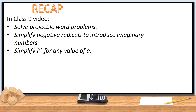Last class we talked about projectile word problems with projectile motion equations — that was minus 16t² plus initial velocity times t plus the initial height, or minus 4.9t² if we were talking about meters per second, the first one being feet per second. We also simplified negative radicals and introduced imaginary numbers. And we looked at what happens if you have i raised to a power greater than four — you subtract out powers of four until you get down to a remainder between one and four, and then you evaluate.